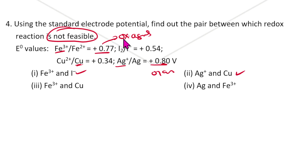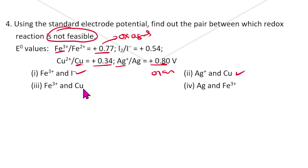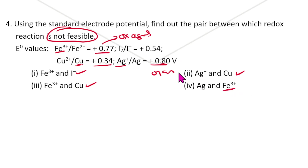Cu can reduce Fe³⁺; Fe³⁺ can oxidize Cu — so that reaction is possible. But Ag oxidizing Fe³⁺ is not possible, because Fe³⁺ is already in the highest oxidation state. So the answer — which is not feasible — is this one.